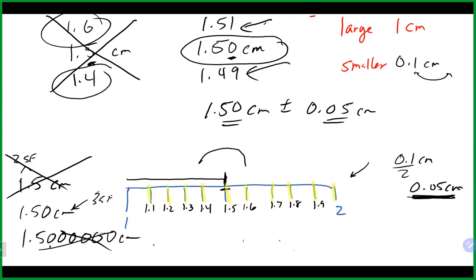This also applies to digital displays — all the numbers shown are significant and are there for a reason. Always record all the numbers, including those on digital balances at the back of the room. Don't add extra zeros that aren't needed either — that tells somebody your measurement is better than it actually was. The uncertain number is always the last significant figure written, which may not always be the last number written in the measurement.